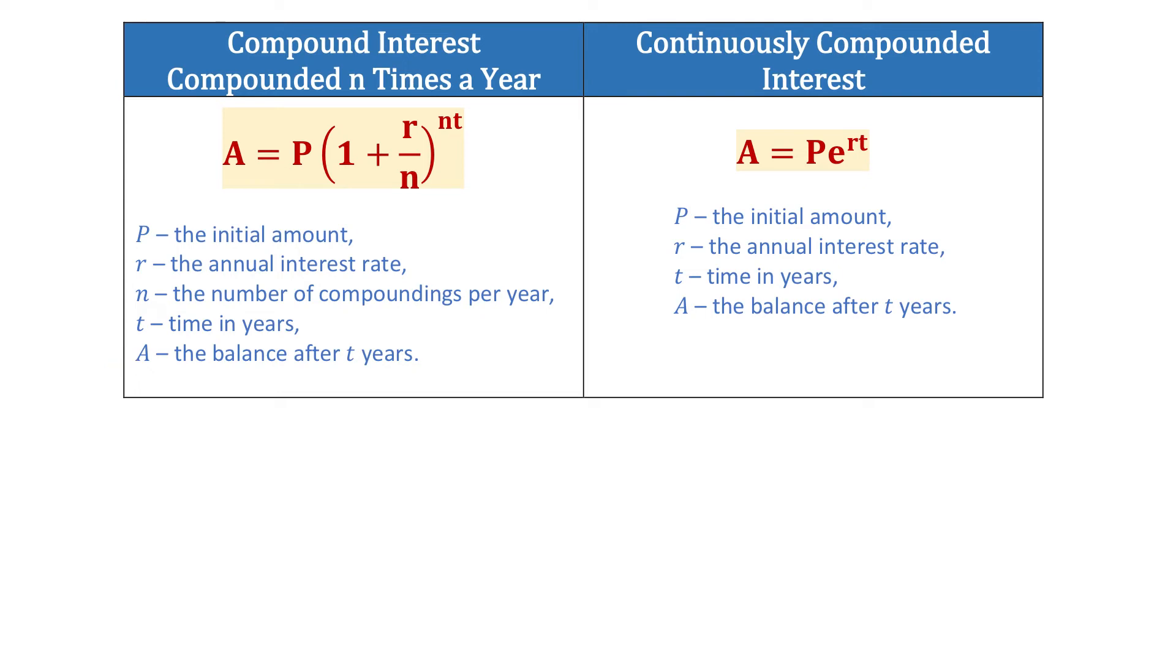If the interest is compounded twice a year, then n equals 2, but if the interest is compounded monthly, then n equals 12.